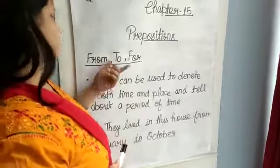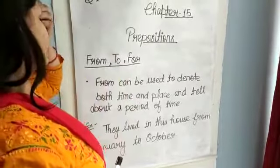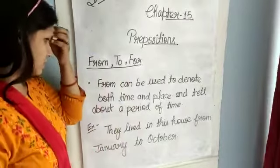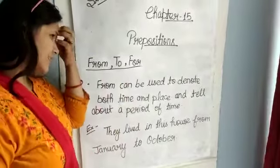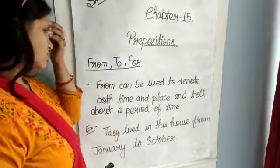So last class, we all learned about prepositions of time. And the next three prepositions of time are: from, to, and for.